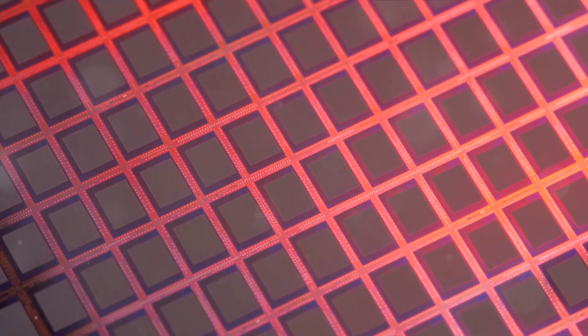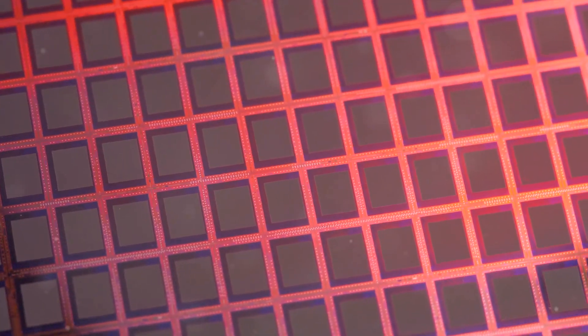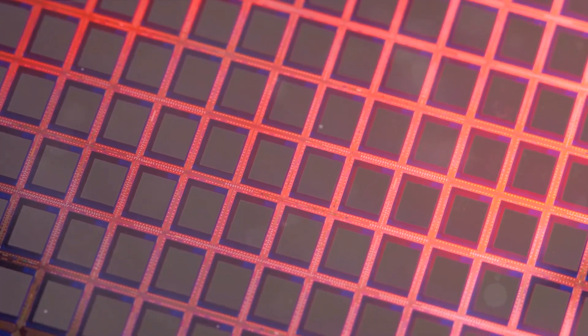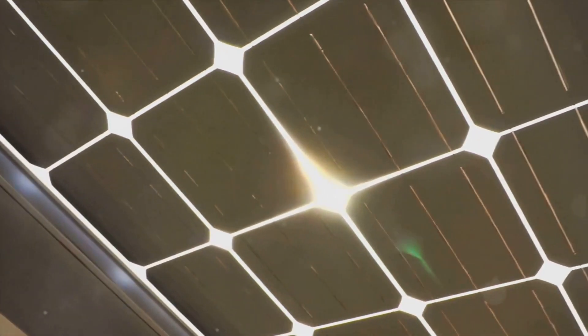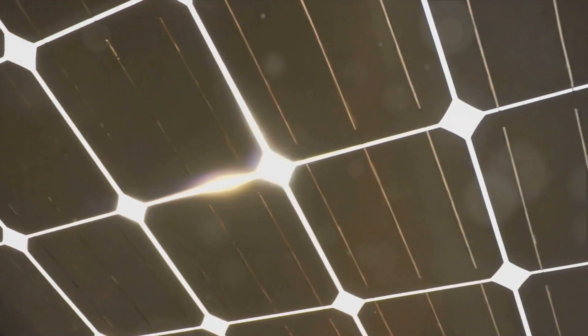In essence, we're creating a one-way street for electrons, allowing them to move in a way that generates an electric current. With the PN junction in place, our wafer is now a photovoltaic device, but we're not finished yet.